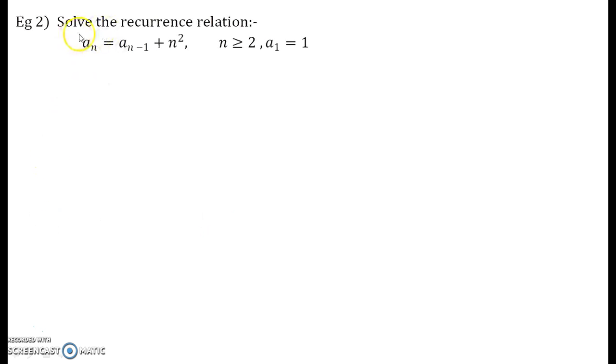Let us see the question. This is a recurrence relation an equals to an minus 1 plus n square, where n is greater equal to 2 and a1 equal to 1. This a1 equal to 1 is our initial condition. So, let us see how to solve this recurrence relation.